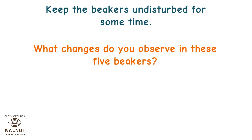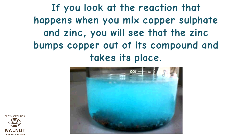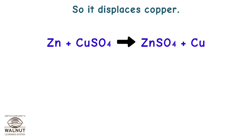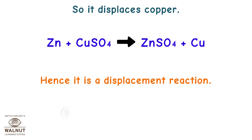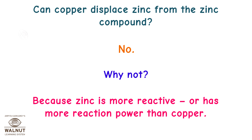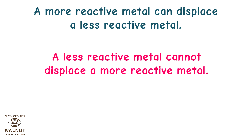What changes do you observe in these five beakers? A metal can displace another metal from its compound in a solution. When you mix copper sulfate and zinc, the zinc displaces copper out of its compound and takes its place — this is a displacement reaction: Zn + CuSO₄ → ZnSO₄ + Cu. Copper cannot displace zinc because zinc is more reactive than copper. A more reactive metal can displace a less reactive metal; a less reactive metal cannot displace a more reactive metal.